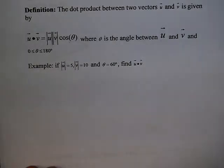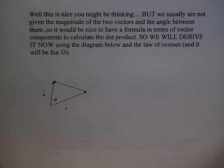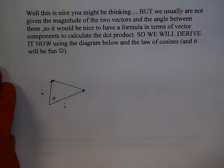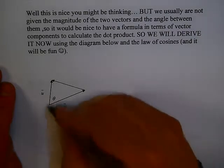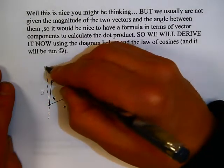You've just multiplied two vectors. A good question is, why would I care? What does this mean? We'll get to that in a minute. But first, we're usually not given the magnitude of two vectors and the angle between them. So it's nice to have a formula using vector components to calculate the dot product. We're going to derive it now, using the diagram below and the law of cosines.